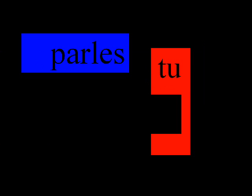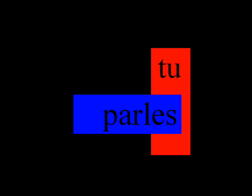Let's look at tu now. Tu is in the rouge, or red, and parle is in the bleu, or blue. Parle looks like it can fit into tu as well. Let's see if we're right. Boop! Yup, it sure did. Notice how the ES made parle fit into tu. This is because you always need an ES when you want to use tu for an ER verb.